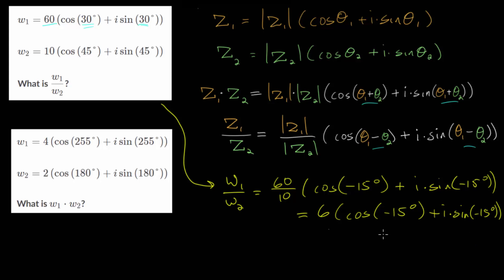If we want, we can write this in rectangular form by distributing the 6 and then simplifying. But polar form tells us our magnitude of this new complex number and the direction of the new complex number, or in other words, we have the modulus and the argument.